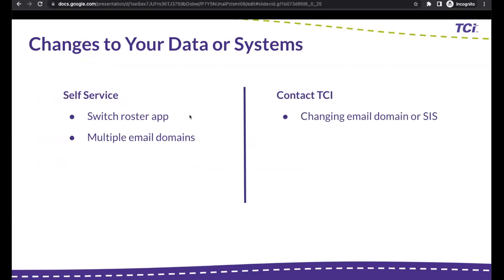Often we get districts switching between roster apps, like between Clever and ClassLink — you can do that yourself in your account. For districts that have multiple email domains for teachers, this is relevant if you have LTI single sign-on and teachers have different emails between signing in and how they're rostered. There's a way to manage that in your account. If you're going to change your district email domain or SIS, we do ask that you contact us at info@teachtci.com first before you make the change, so we can manage it and ensure a seamless transition.